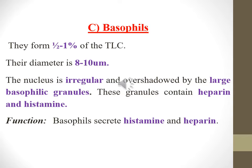Basophils form half to one percent of the total leukocytic count. Their diameter is 8 to 10 micrometers. The nucleus is irregular and overshadowed by the large basophilic granules. These granules contain heparin and histamine. Basophils secrete histamine and heparin.